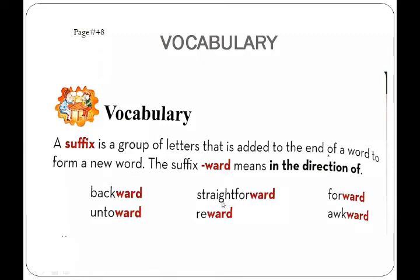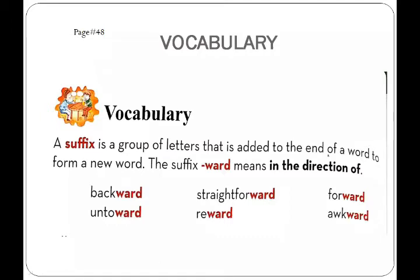'Straightforward' — when we add '-ward' at the end of 'straight for,' it becomes 'straightforward,' which means up to right or honest. 'Forward' — we place '-ward' at the end of 'for,' so it becomes a new word. 'Untoward' — when we add '-ward' at the end of 'unto,' it becomes 'untoward.' 'Reward' — 're' means to do something again, and '-ward' is the suffix added to the end of 're,' so it becomes 'reward,' meaning some surprise or getting something back. 'Awkward' — we add '-ward' to 'awk' and it becomes 'awkward.'